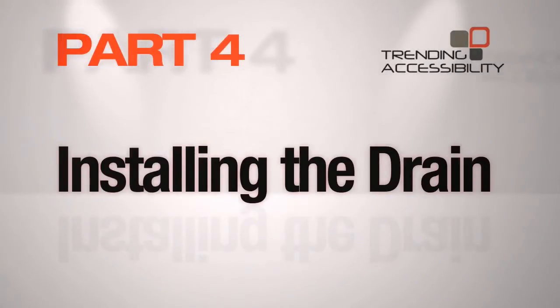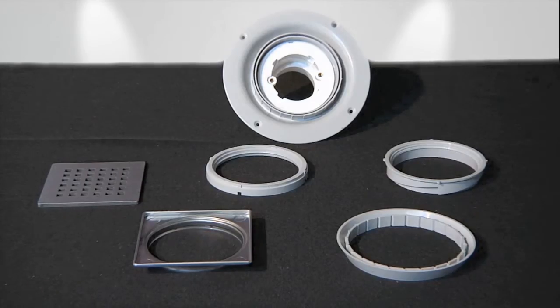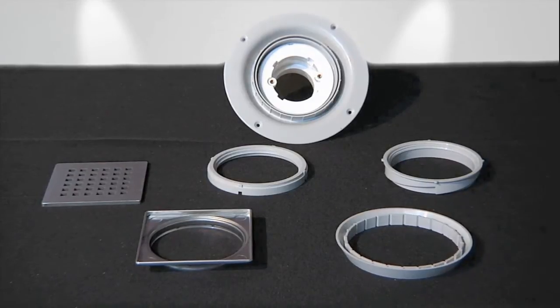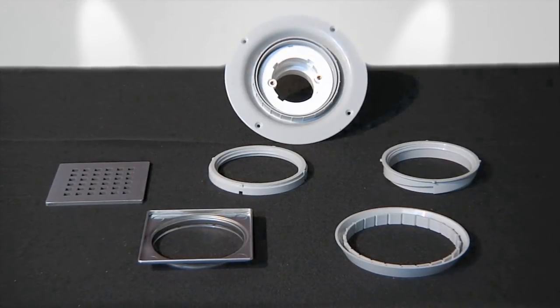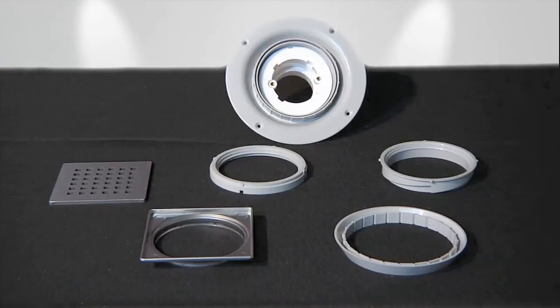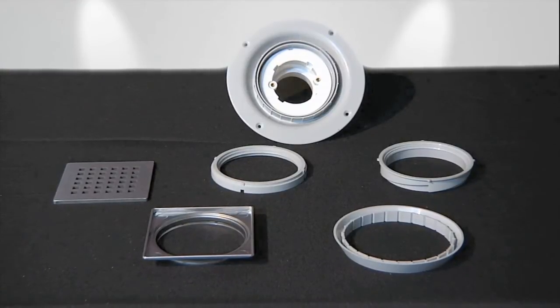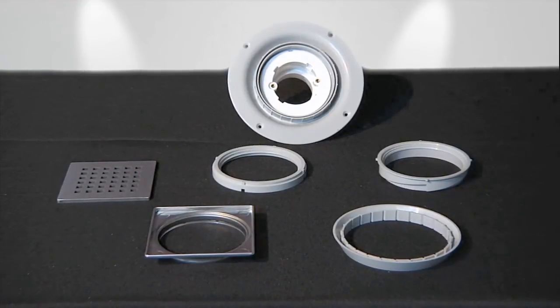Part 4: Installing the drain. Now that the pan is installed and fastened securely, you're ready to install the drain that came with the kit. This drain comes fully assembled in the box. It also comes with the fastening screws to secure it into the pan. Take the drain assembly apart so that you're installing only the adapter flange right now.